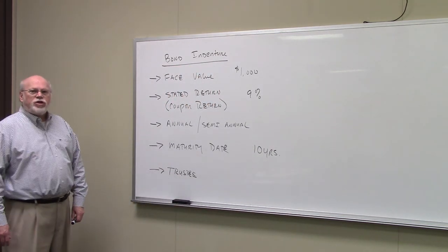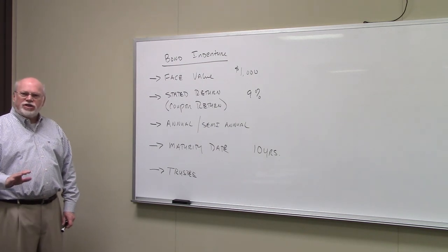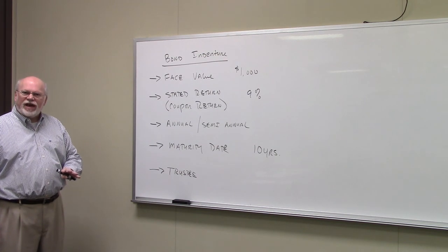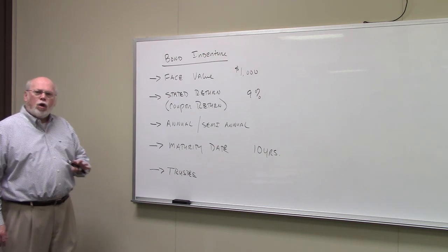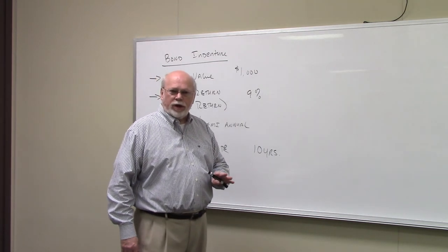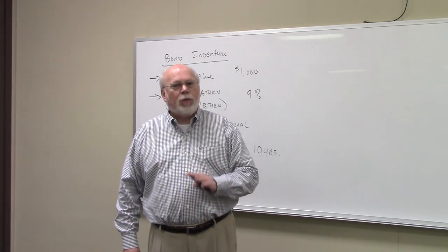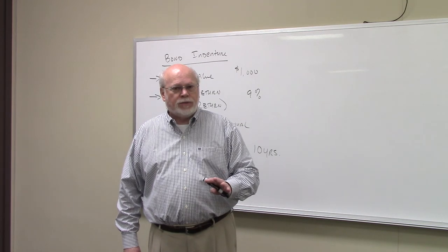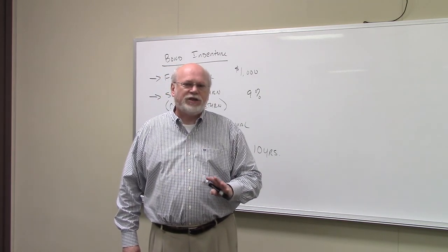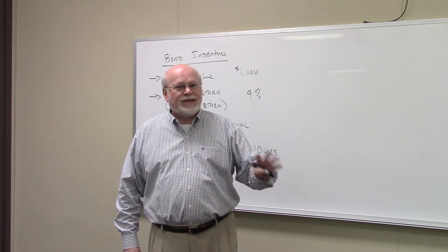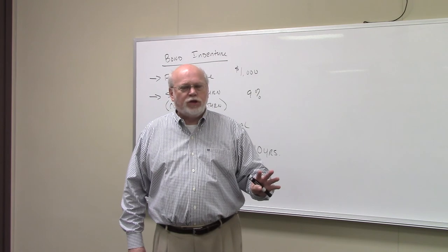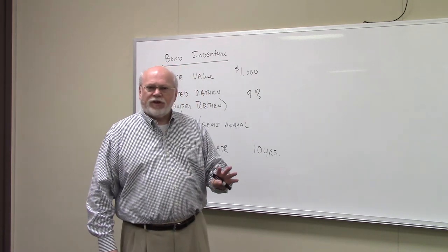Now in a bond indenture there are certain common elements that you see. One thing you see is something called face value. All bonds have a face value of some sort or another. With bonds now, face value is a multiple of a thousand dollars. Probably most bonds have a face value of a thousand, but five thousand, ten thousand, hundred thousand, a million dollar face value, that's not unusual. That's actually fairly common.